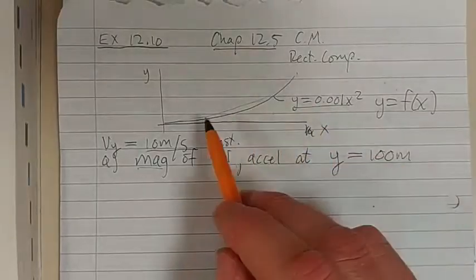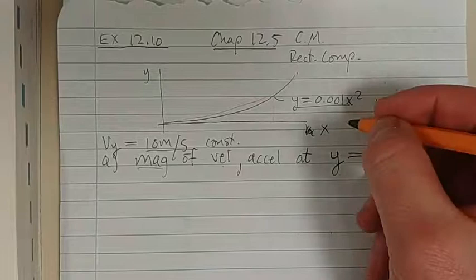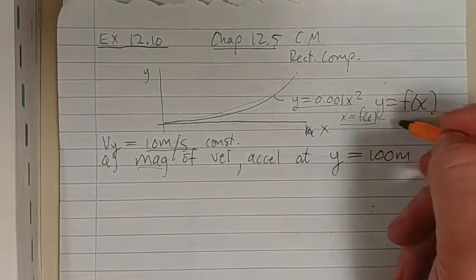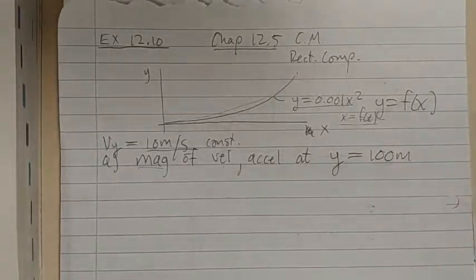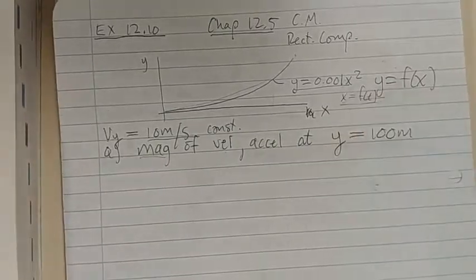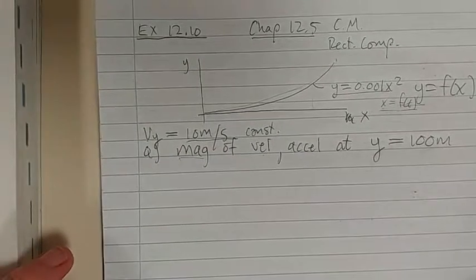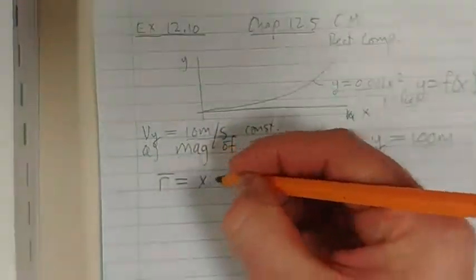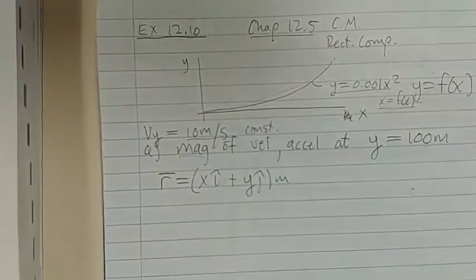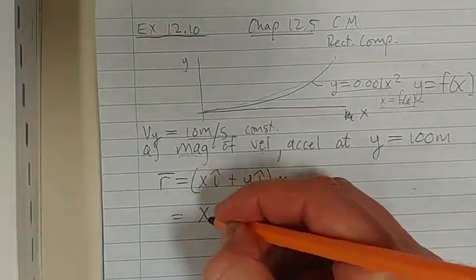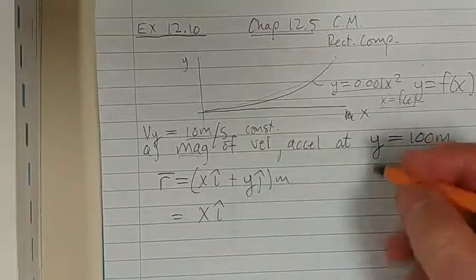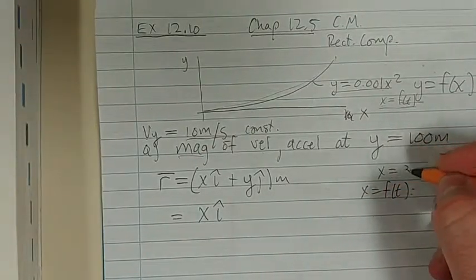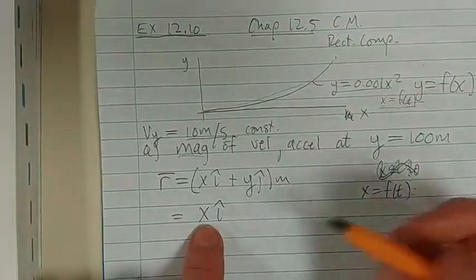What's different from the previous problem? The previous problem also had x equal to something as a function of time — an explicit function where x equaled something times t, and that simplified the whole problem. But now we do not have x as an explicit function of time. We don't have something like x equals 3t. We just know that x is a function of time.